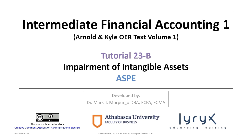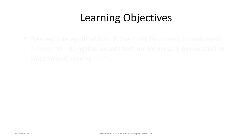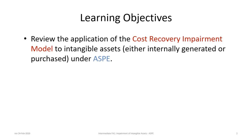The next tutorial, 23C, will review accounting for impairment of intangible assets under IFRS. This tutorial is based on the application of the cost recovery impairment model to intangible assets under ASPE, and it does not matter whether the intangible asset is internally generated or purchased — the application of the model is the same for both.